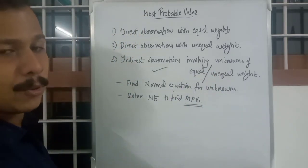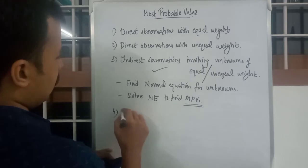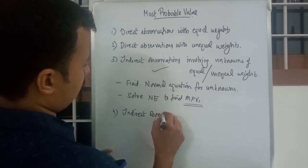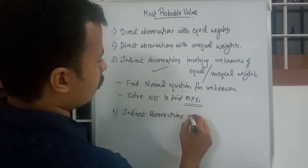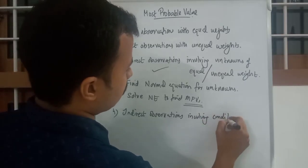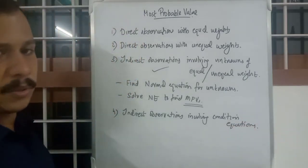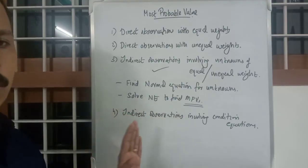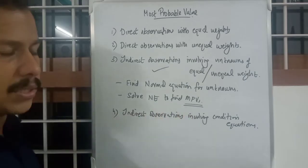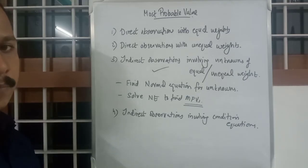That is how you determine indirect observations involving unknowns with equal or unequal weights. The last case — the fourth one — is indirect observations involving condition equations. This case is for the sake of classification; we don't have scope for getting into it as it is a very complex process for finding the MPV.